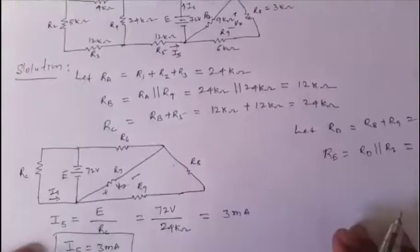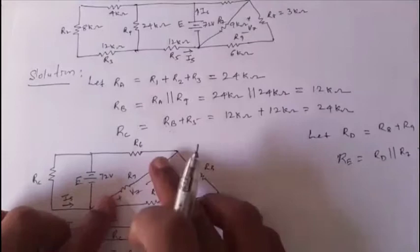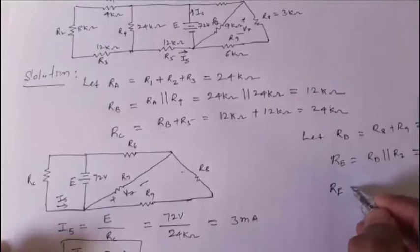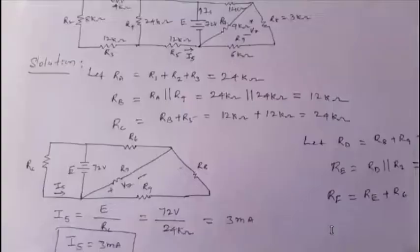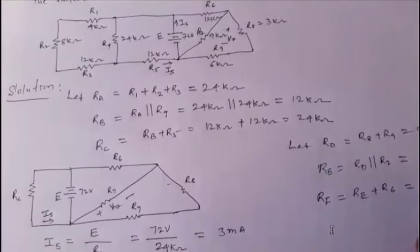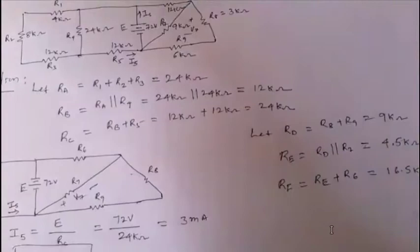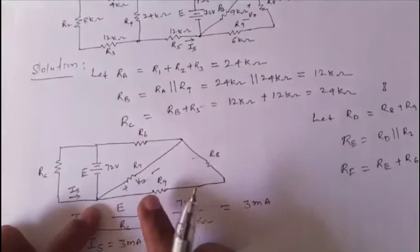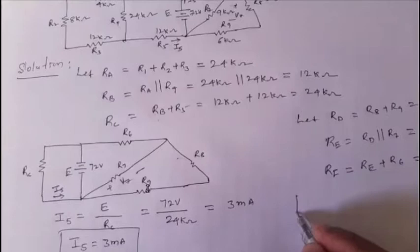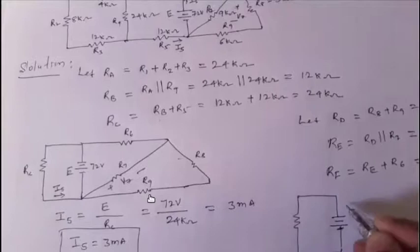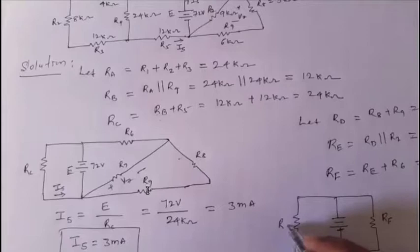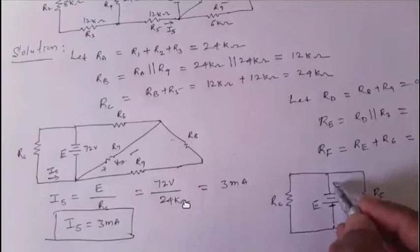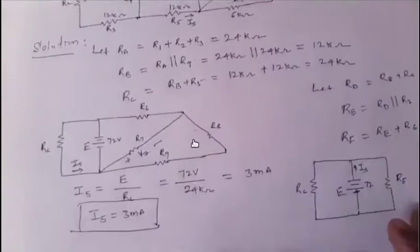When rd and r7 are replaced by re, that resistance comes in series with r6. Let rf = re + r6 = 4.5 kΩ + 12 kΩ = 16.5 kΩ. Redrawing the network, we have rc, the voltage source e = 72 V, and rf all in parallel, with source current is.